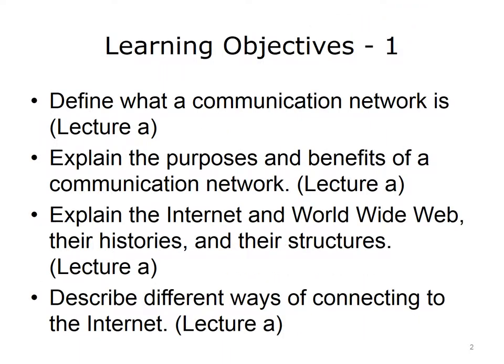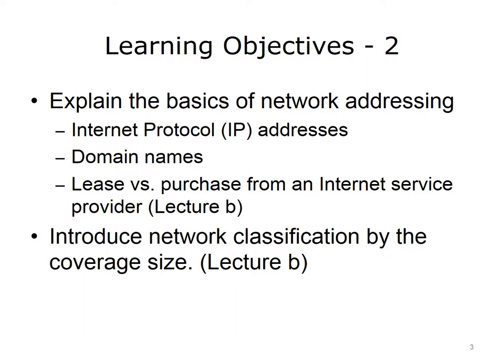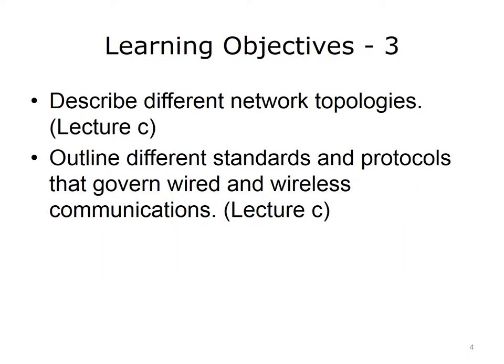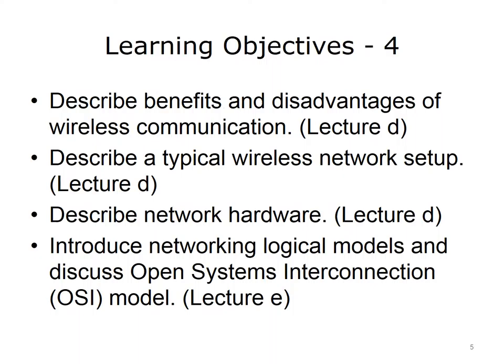The objectives for this unit on Networks are to define what a communication network is, explain the purposes and benefits of a communication network, explain the Internet and World Wide Web, their histories and their structures, describe different ways of connecting to the Internet, explain basics of network addressing, IP addresses and domain names and how they can be leased or purchased from an Internet service provider, introduce network classification by coverage size, describe different network topologies, outline different standards and protocols that govern wired and wireless communications, describe benefits and disadvantages of wireless communication, describe a typical wireless network setup, describe network hardware, and finally, to introduce networking logical models and discuss open systems interconnection, or OSI model.